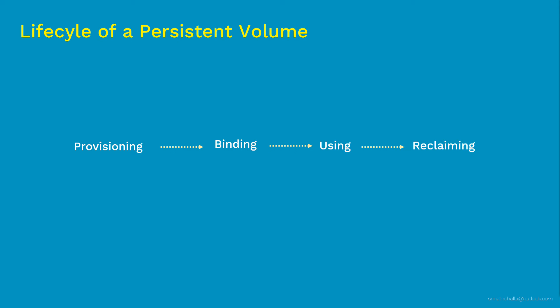To recap: in the provisioning stage, typically the administrator creates storage chunks called persistent volumes. Then the developer requests storage using a persistent volume claim. Once the request finds a suitable PV it gets bound. After that, the developer can use this volume inside the pod to mount at a path and use it. Finally, when done, the user deletes the PVC from Kubernetes, allowing the resources to be reclaimed. That's the lifecycle of persistent volumes.